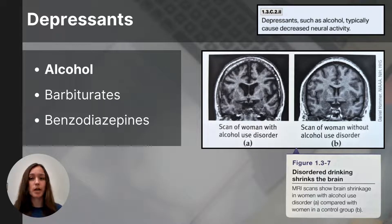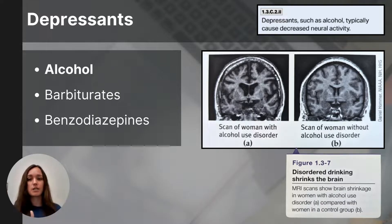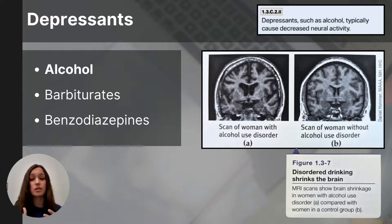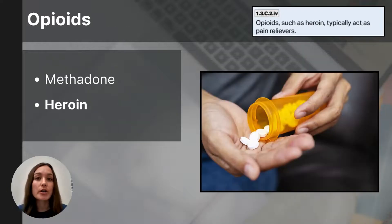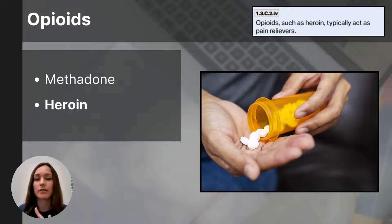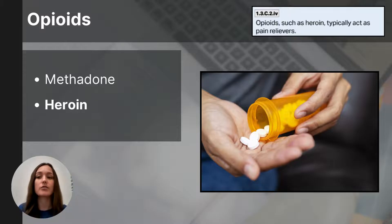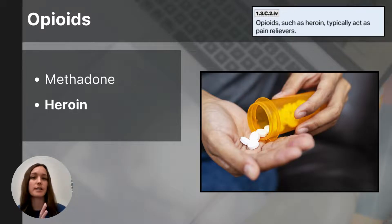Benzodiazepines are depressants prescribed as anti-anxiety medications that calm the brain and body, known by names like Xanax, Ativan, or Valium. Both barbiturates and benzodiazepines act as agonists on GABA receptors — inhibitory neurotransmitters that slow neural activity. Opioids are substances that mimic the body's endorphins and give a sensation of pain relief. They can be prescription painkillers — including codeine, OxyContin, Vicodin, morphine, and fentanyl — or illicit recreational substances like heroin. Opioids reduce the sensation of pain but also slow the brain and body's functions, which is why they are also placed in the depressant category.